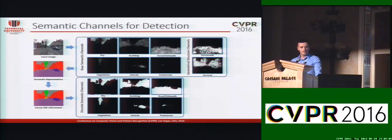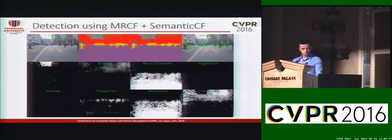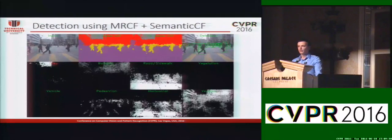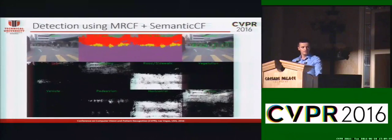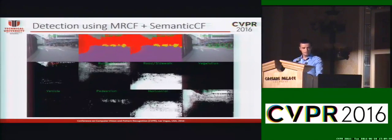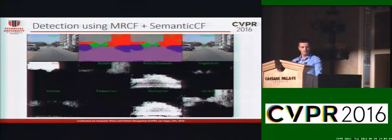Finally, in order to improve detection results, we incorporate semantic segmentation as semantic channels next to the multi-resolution filter channels. We generate for each semantic class a raw semantic channel from the pixel-wise classification costs, and we also generate a binary semantic channel that results from the conditional random field inference. Here you can see some illustrations of these raw semantic channels for semantic classes such as sky, building, road, sidewalk, and so on. On the top part, you can see the final segmentation and detection using also semantic channels.